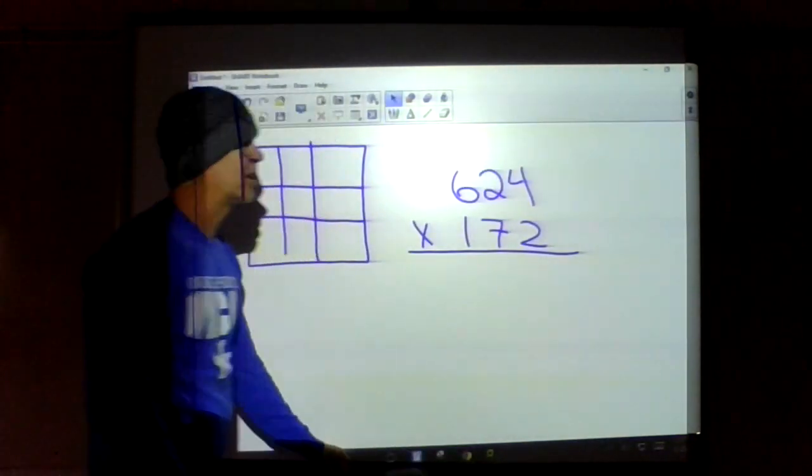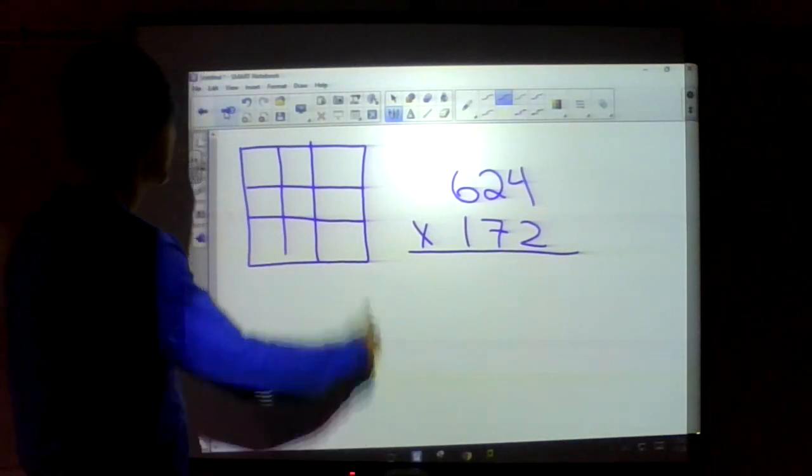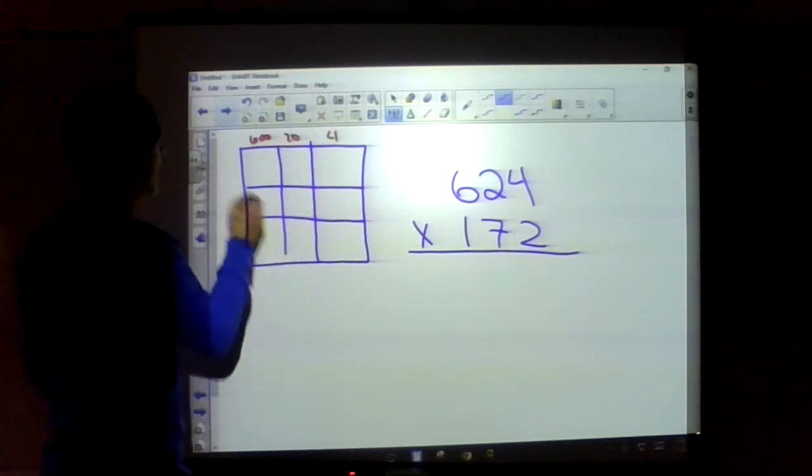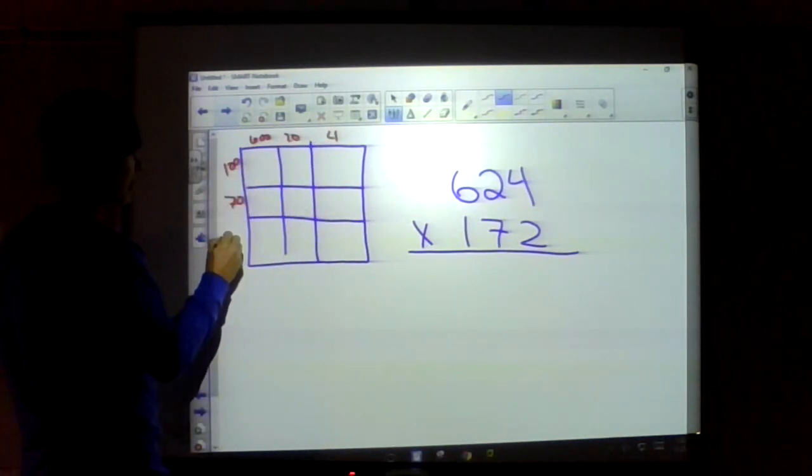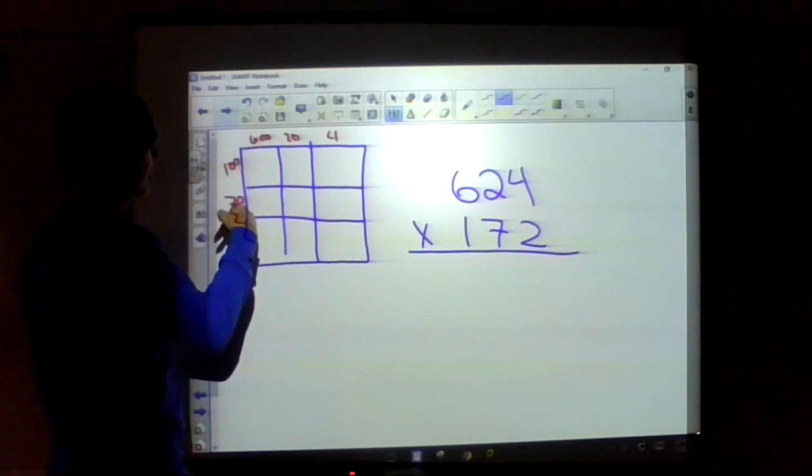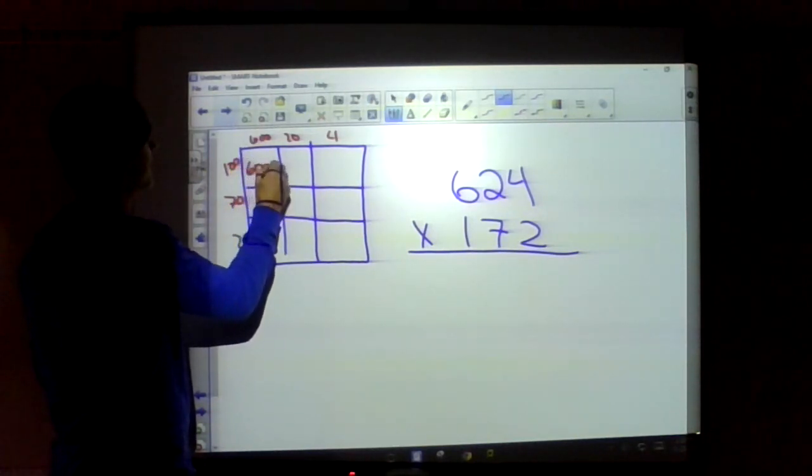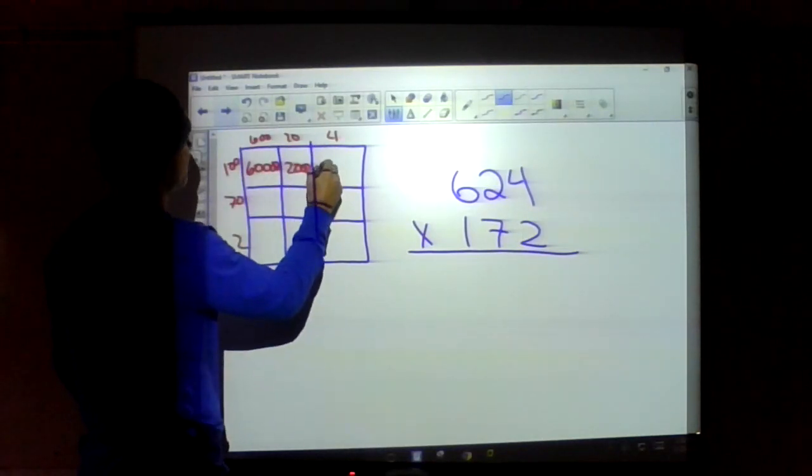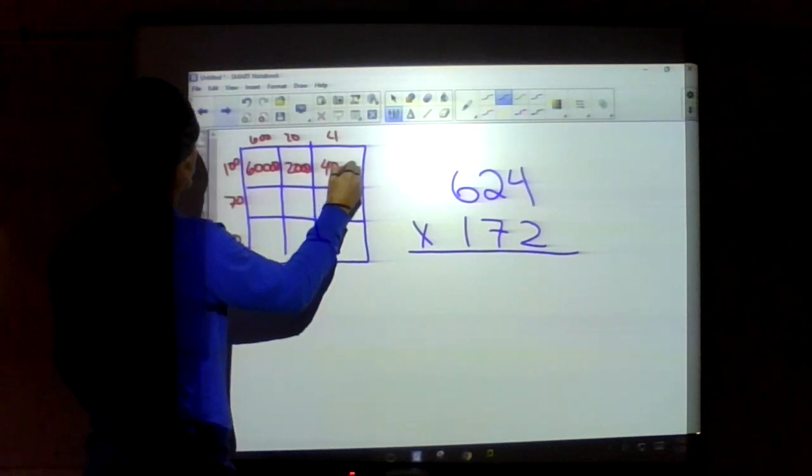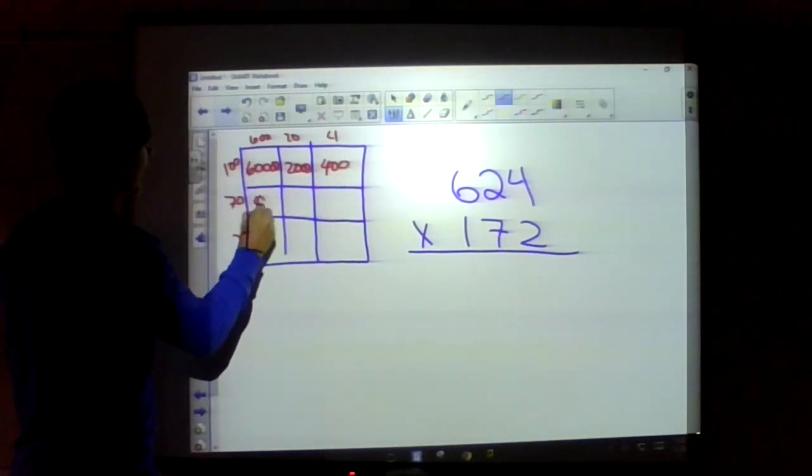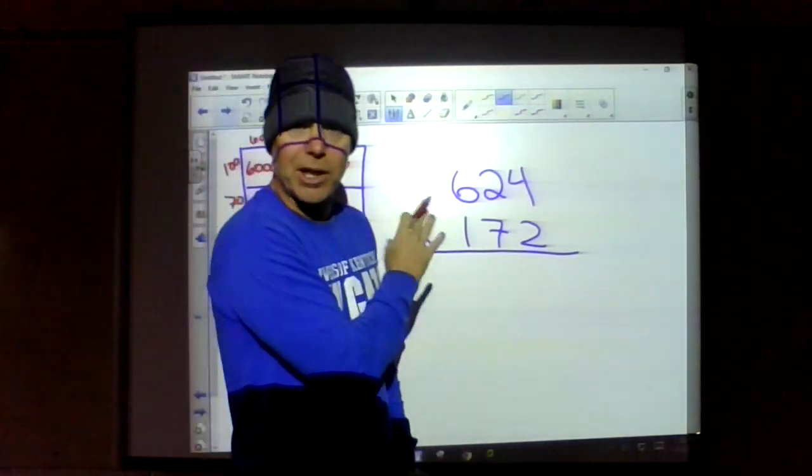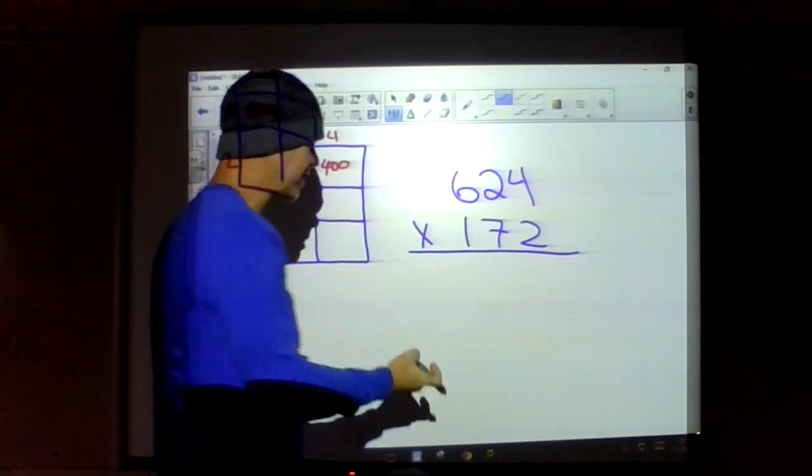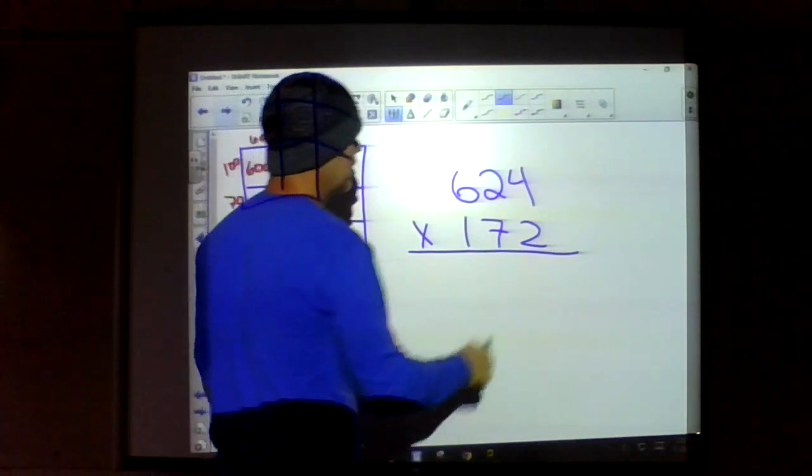Here we go, 624 times 172. Now I could put this up here, 624 in expanded notation along here and work out multiplying. I could do that, no problem. I don't want to do that. I want to do the standard algorithm. It's faster, more efficient, cleaner, and neater.